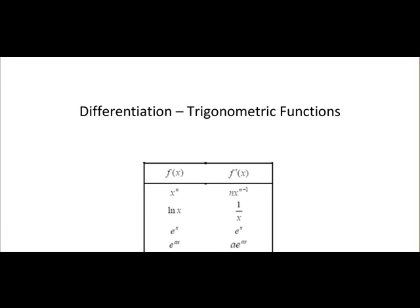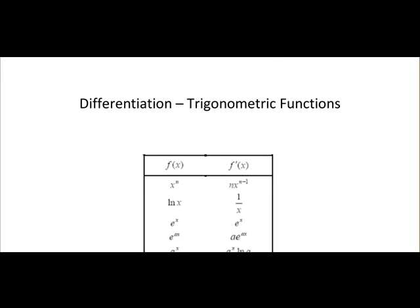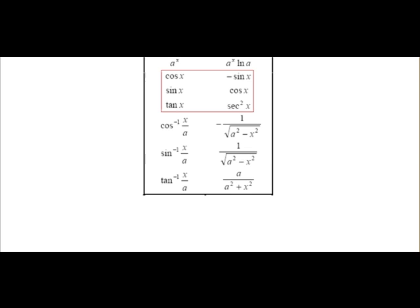Here we'll be concentrating on differentiating trigonometric functions. The most common ones which are used are cosine, sine, and tangent. When you differentiate cosine of x, you get minus sine of x. When you differentiate sine of x, you get cosine of x. And when you differentiate tangent of x, you get sec squared x.